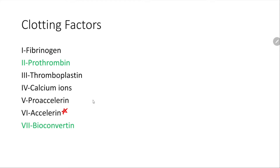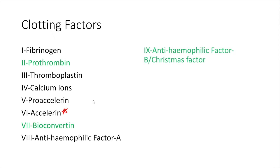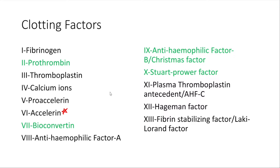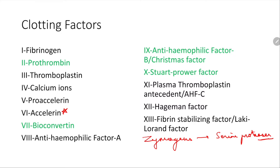Factor 7 is bioconvertin. Factor 8 is anti-haemophilic factor A. Factor 9 is anti-haemophilic factor B, or Christmas factor. Factor 10 is Stuart-Prower factor. Factor 11 is plasma thromboplastin antecedent, or anti-haemophilic factor C. Factor 12 is the Hageman factor, and factor 13 is the fibrin stabilizing factor, also known as the Laki-Lorand factor. These factors in their inactivated forms roam around in the blood as zymogens, and when activated they become serine proteases.